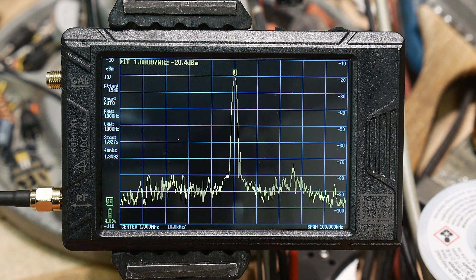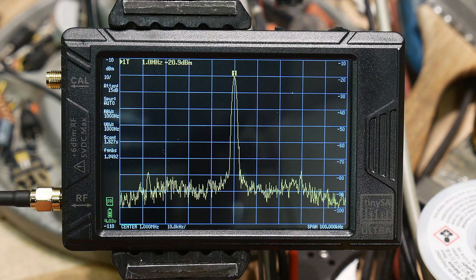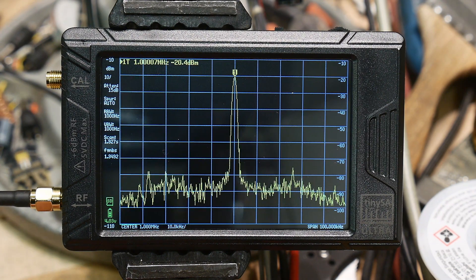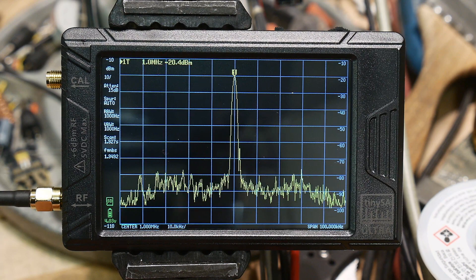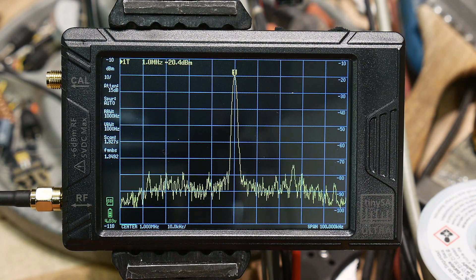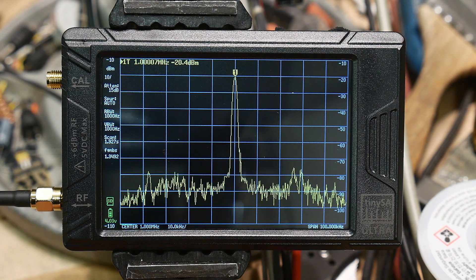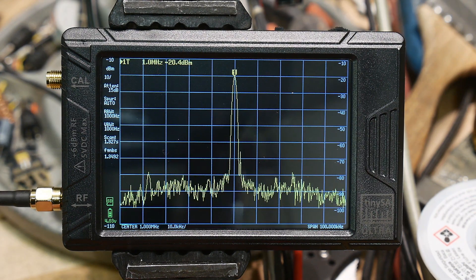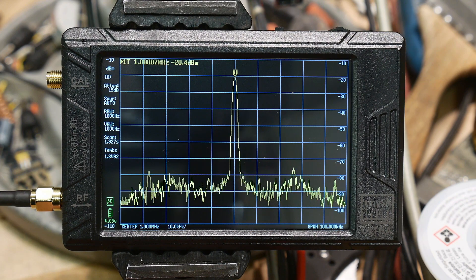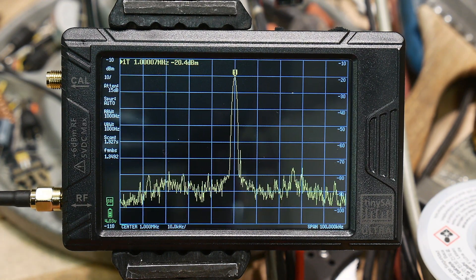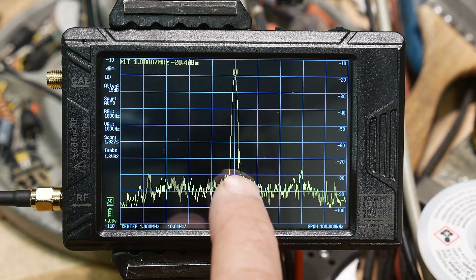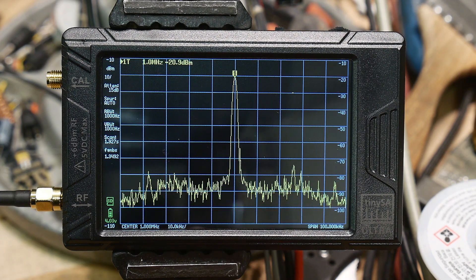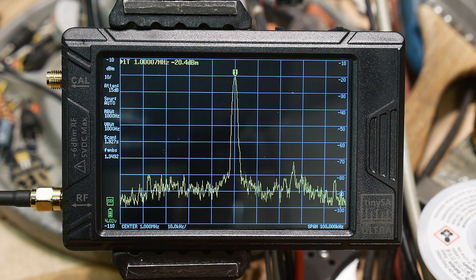Let's do a center of one megahertz and a span of 100 kilohertz. There we go. Our resolution bandwidth is one kilohertz and our video bandwidth is one kilohertz. Every once in a while we're getting a little spur on the right hand side.